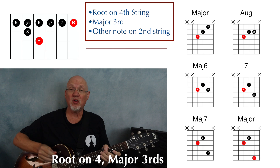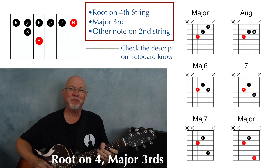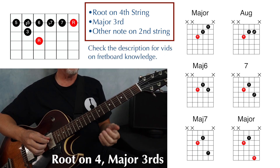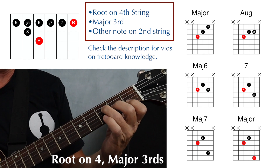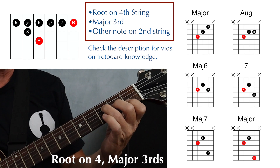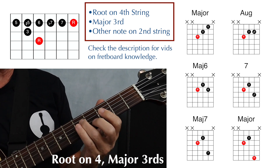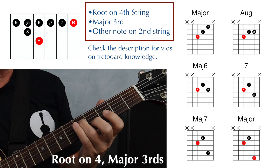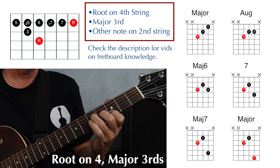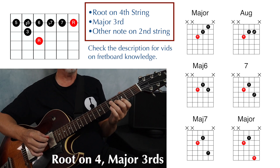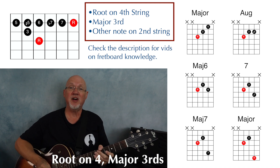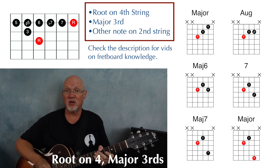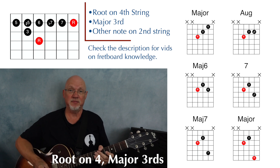Keep in mind that these are all movable shapes. We called these all F chords because we played F as the root note. If we move our root note two frets higher, this would be a sequence of G chords. To use these shapes, you need to know the fretboard, and if you need some help with that, I've got some fretboard knowledge videos linked in the description.